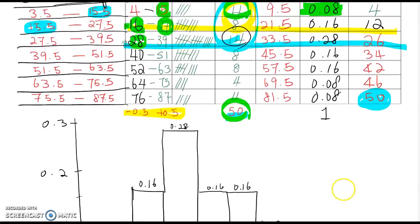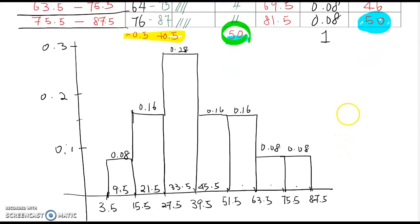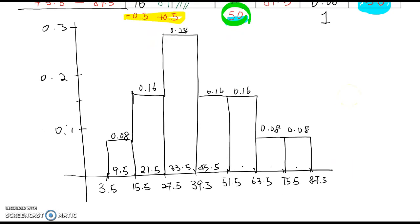And 57.5, and 69.5, and then 81.5. Then you are done with histogram using relative frequency.